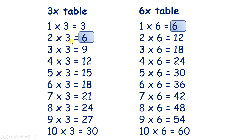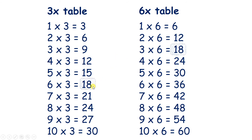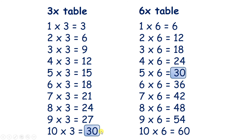So two times three gives the same answer as one times six. Four times three is twelve, and so is two times six. Six times three is eighteen, and so is three times six. Eight times three is the same as four times six, and ten times three is the same as five times six.